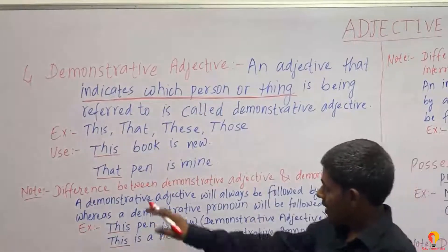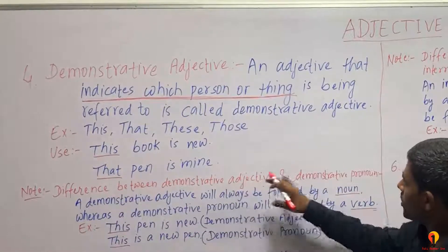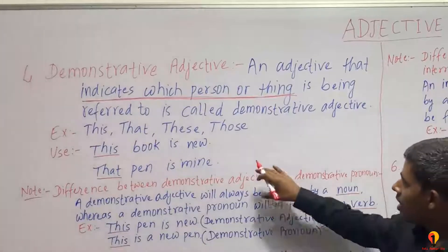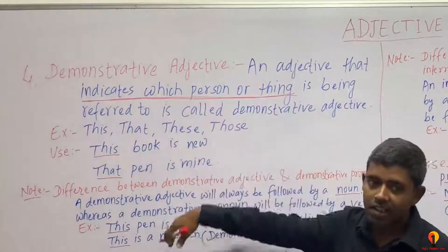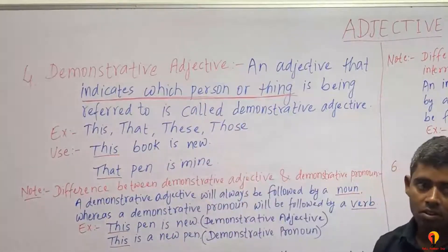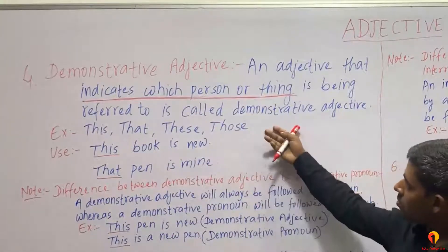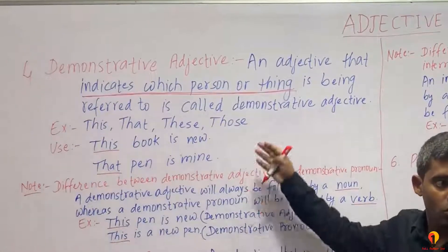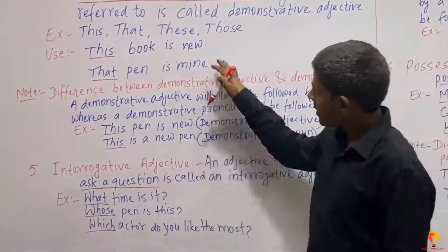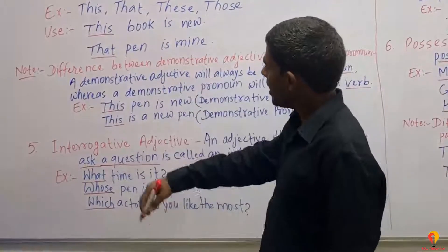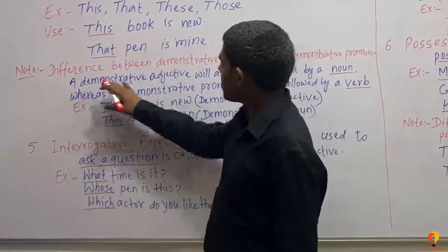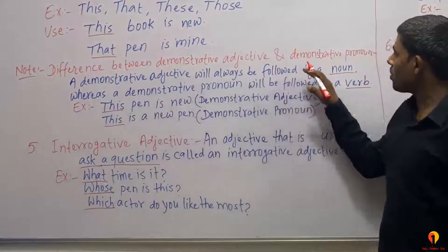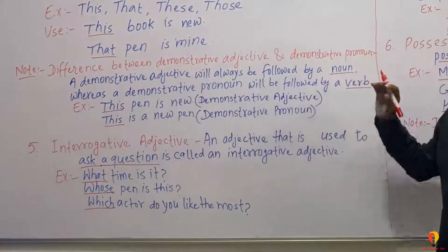An important point is the difference between Demonstrative Pronouns and Demonstrative Adjectives. Now, there are two similarities, but there is a small difference. What is that difference? A Demonstrative Adjective will always be followed by a noun.